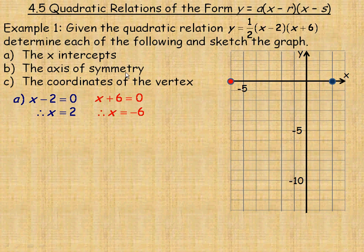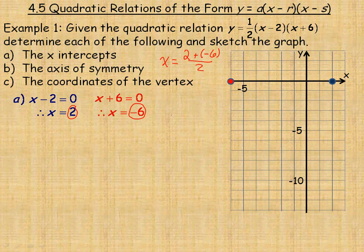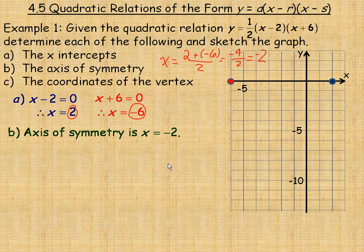The axis of symmetry is the vertical line through the vertex, which is halfway between the two intercepts. To find it, we take the average of 2 and negative 6: add them together to get negative 4, then divide by 2 to get negative 2. So the axis of symmetry is x equals negative 2 — the vertical line right through the middle of the graph, halfway between positive 2 and negative 6.